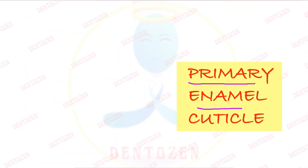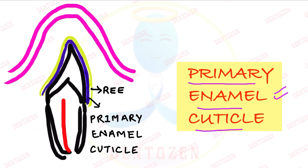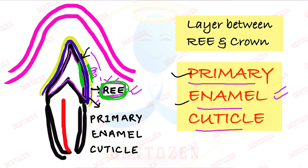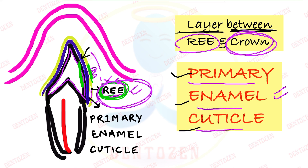Let's understand what primary enamel cuticle is. Enamel develops inside the jaws and is covered by reduced enamel epithelium — the ameloblast cells. After finishing enamel formation, these ameloblast cells along with other cells of the enamel organ compress to form the reduced enamel epithelium. Between this enamel and the reduced enamel epithelium, another layer forms, known as enamel cuticle — visible here as the purple layer. Primary enamel cuticle is present between the reduced enamel epithelium and the enamel of the newly formed tooth.